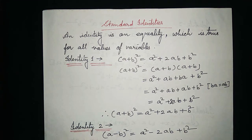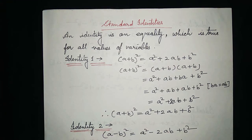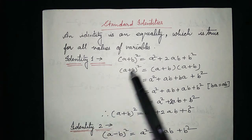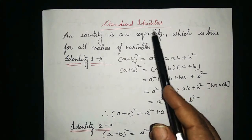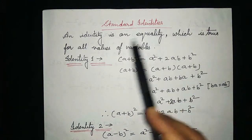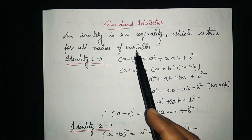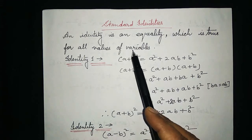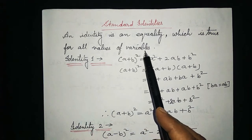Now see the identity. Here I am showing the proof of the identities. First, an identity is an equality which is true for all values of variables.